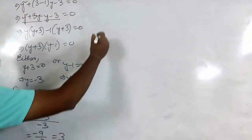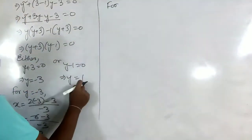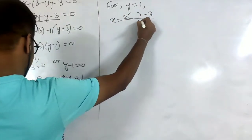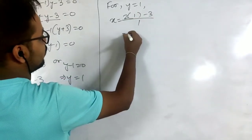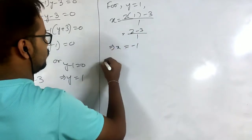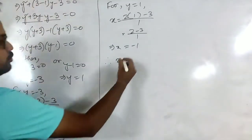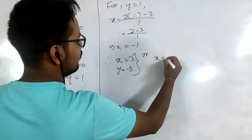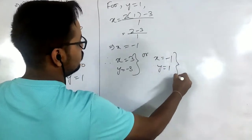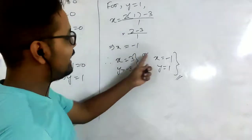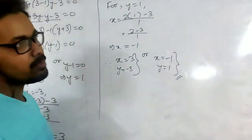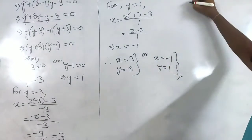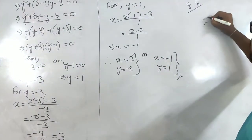For y = 1, x = (2(1) - 3)/1 = (2 - 3)/1 = -1. Therefore the values are x = 3, y = -3 or x = -1, y = 1. Those are the two solution pairs. The key point is that 8 was expressed as a power of 2, and 27 and 9 were expressed as powers of 3.